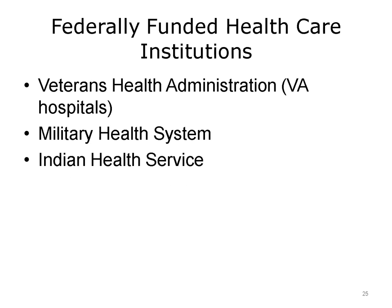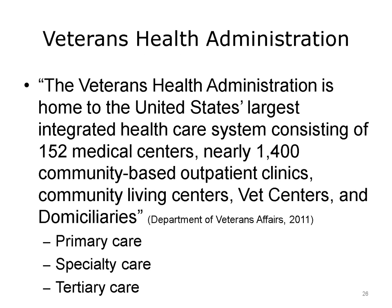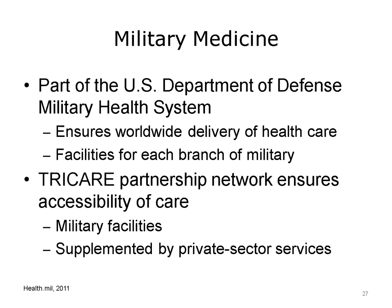There are three main federally funded health care institutions in the United States: the Veterans Health Administration, the Military Health System, and the Indian Health Service. The Veterans Health Administration (VA) is the largest integrated health system in the United States, consisting of 153 medical centers and 1,400 community-based outpatient facilities, and also includes community living centers, vet centers for outreach, and domiciliaries for patients with long-term medical conditions. The VA provides primary, secondary, and tertiary care. The Military Health System is part of the U.S. Department of Defense, providing services to service members, retirees, and their families. Each branch of the armed forces has its own network of hospitals and health care facilities, and TRICARE is the health care program that ensures care worldwide, supplemented by civilian health care providers, organizations, and pharmacies.